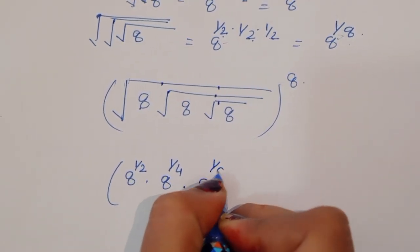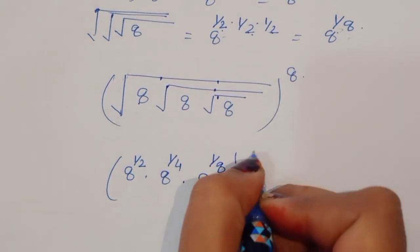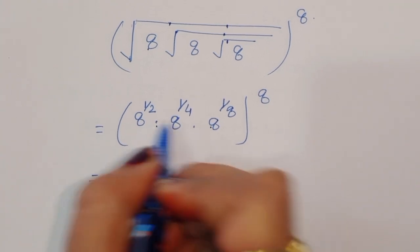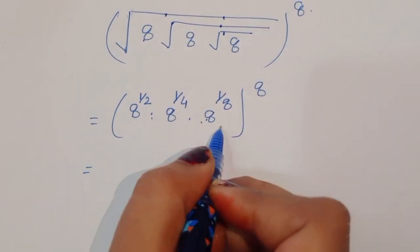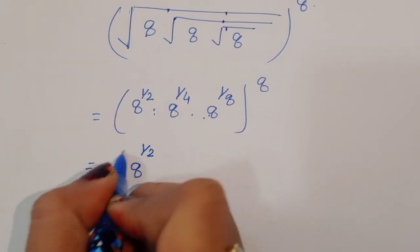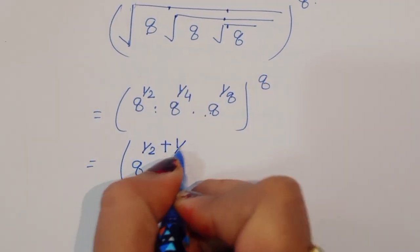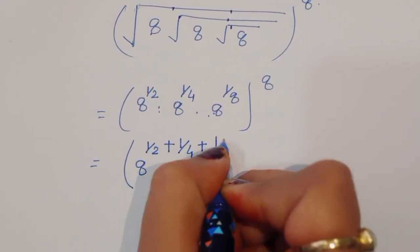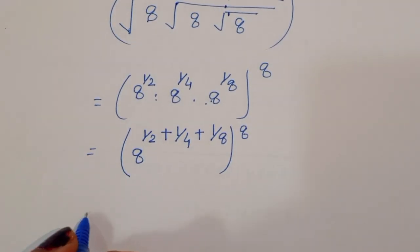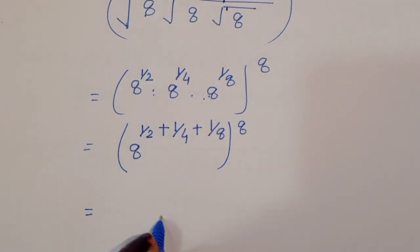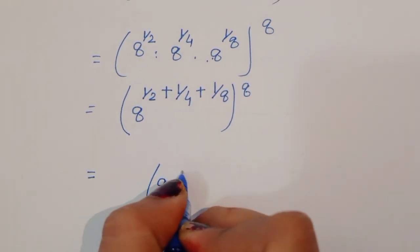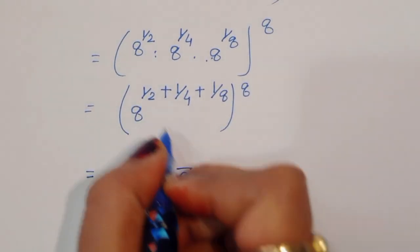We can write this as 8 power 1 by 8, and then raised to power 8. Since the powers are in multiplication form, we can write this as 8 power 1 by 2 plus 1 by 4 plus 1 by 8, all raised to power 8. Now we add these powers by taking the LCM.